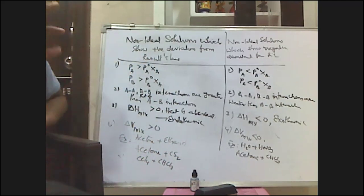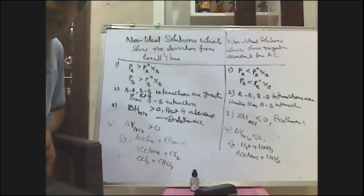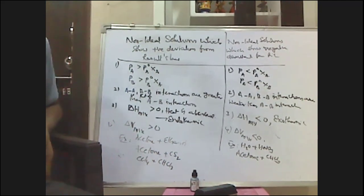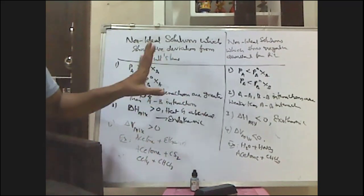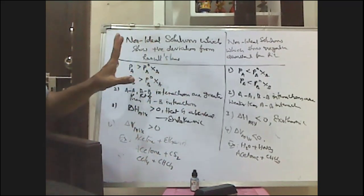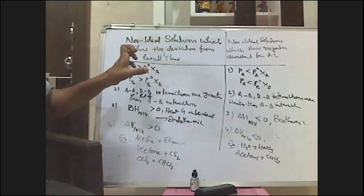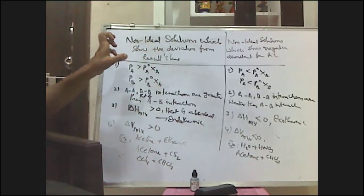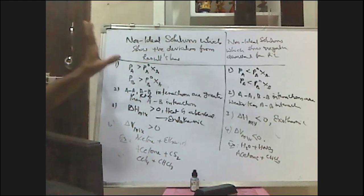In summary, for liquid-in-liquid type of solutions, based on Raoult's law, solutions are classified into ideal and non-ideal, with positive and negative deviation types. For intermediate public examinations: what do you mean by positive deviation from Raoult's law means the experimentally determined vapor pressures or partial pressures are greater than the calculated values by using Raoult's law.